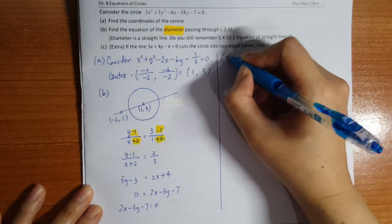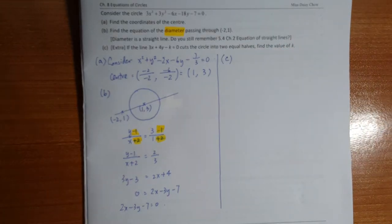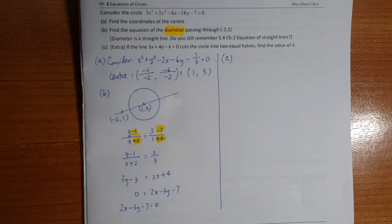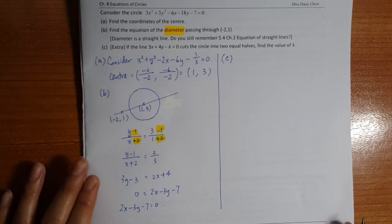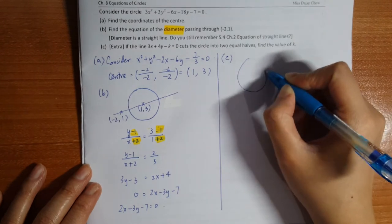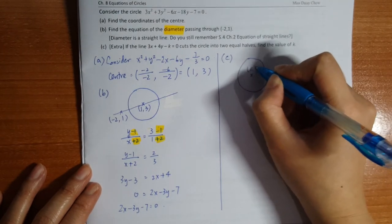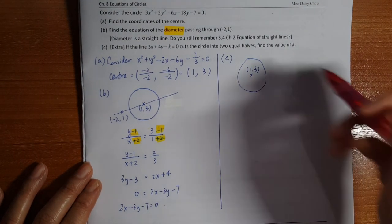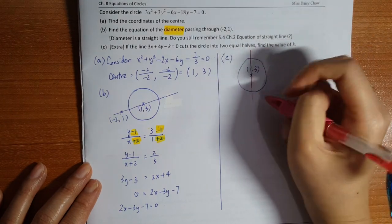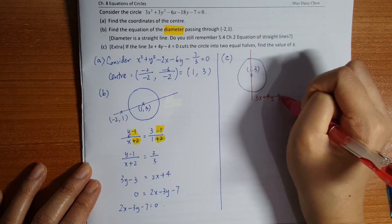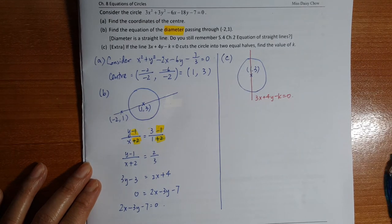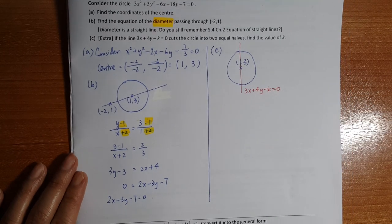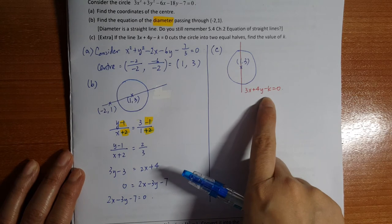So part C is extra questions. If the line 3x plus 4y minus k equals to 0 cut the circle into two halves, and then the question asks you to find the value of k. Again, same thing, draw it. The center is 1, 3. Now part C tells you there's a line that cuts the circle in half. This line is 3x plus 4y minus k equals to 0. Now I'm going to ask you, k is how much?